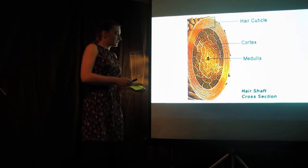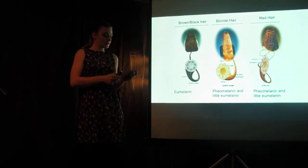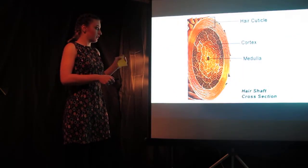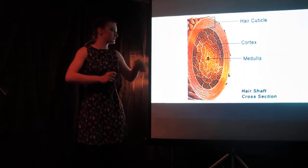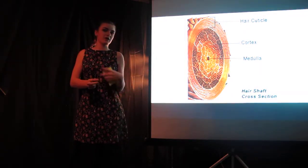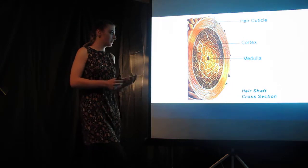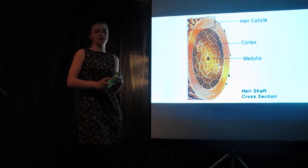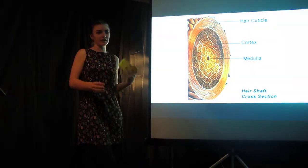Now we'll go back to the cortex. The cortex is the largest section. This is what makes up the bulk of your hair, and this is where the natural pigment, known as melanin, is stored. This is also where the most damage can be seen from hair colors and chemical processes.